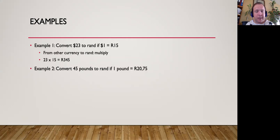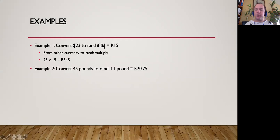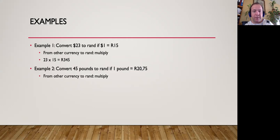Example two: convert 45 pounds to rand, if 1 pound is equal to 20.75 rand. The pound is stronger than the rand — notice the 1 represents the stronger unit and the bigger number represents the weaker unit. We're going from pounds to rands, which means we need to multiply. So 45 pounds times 20.75 gives you an answer of 933.75 rand.